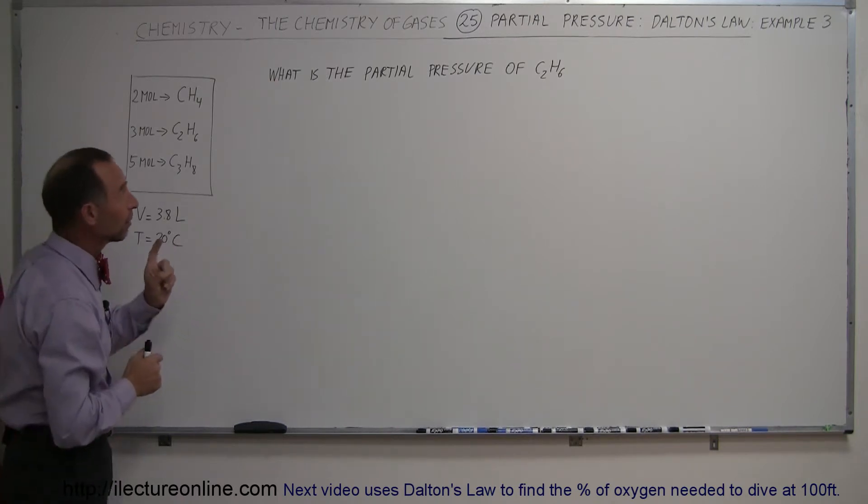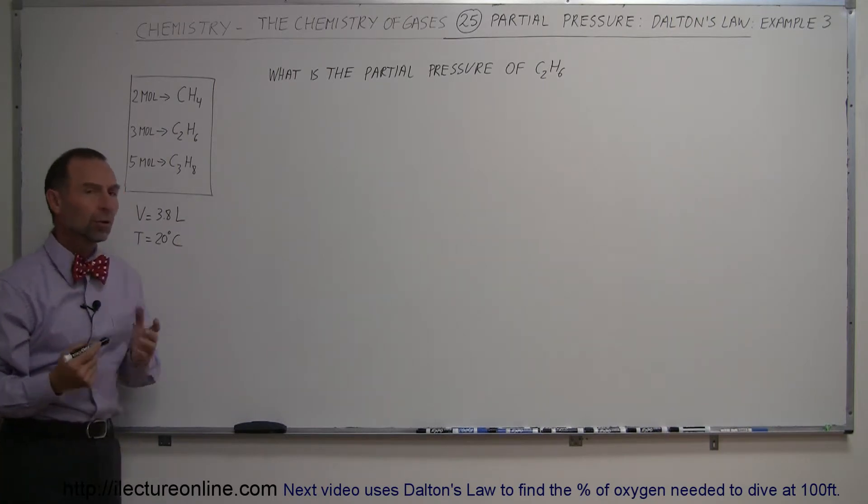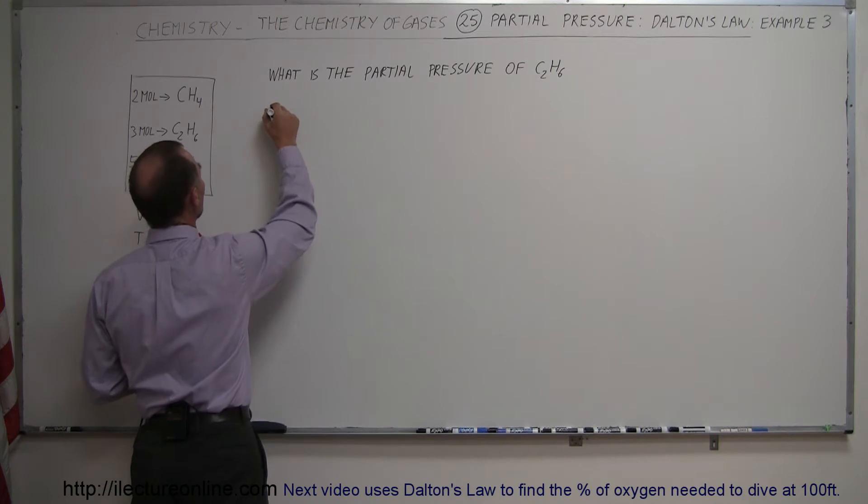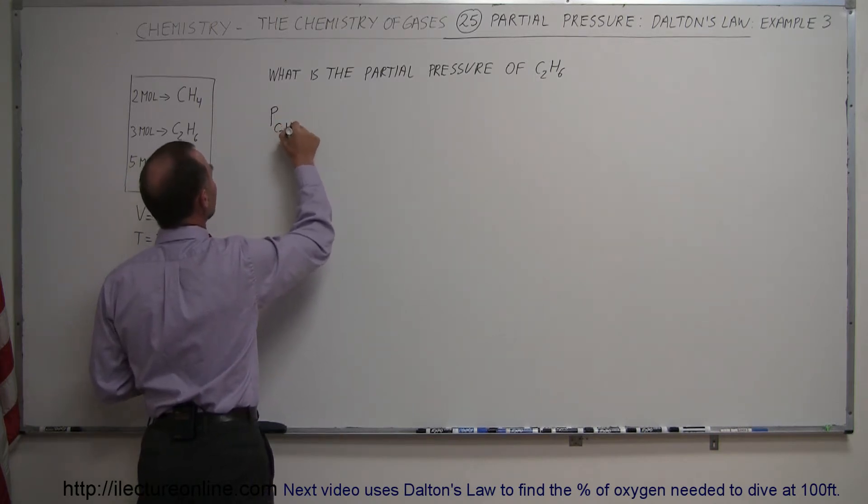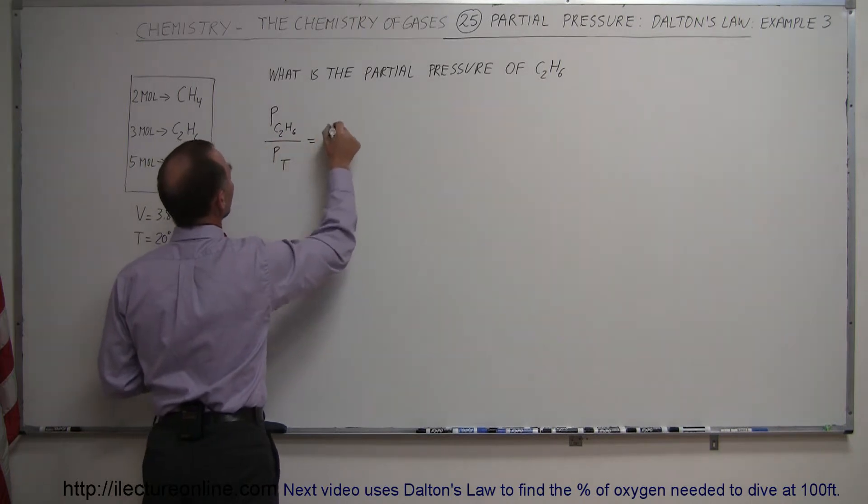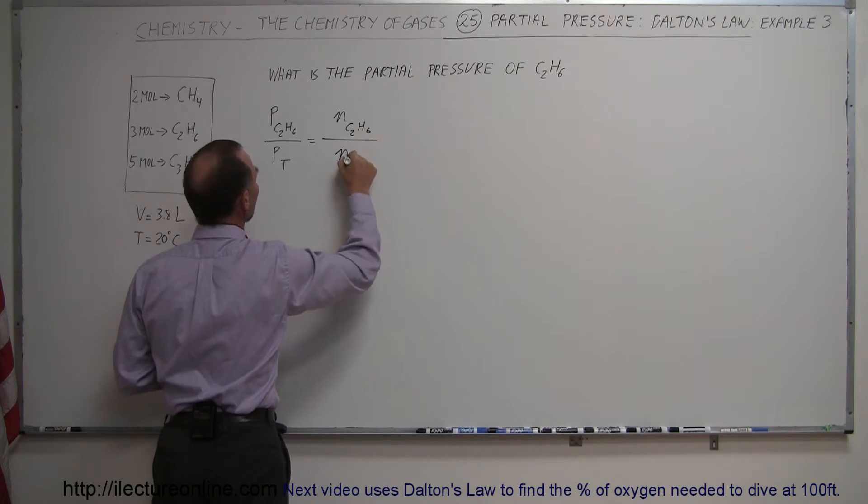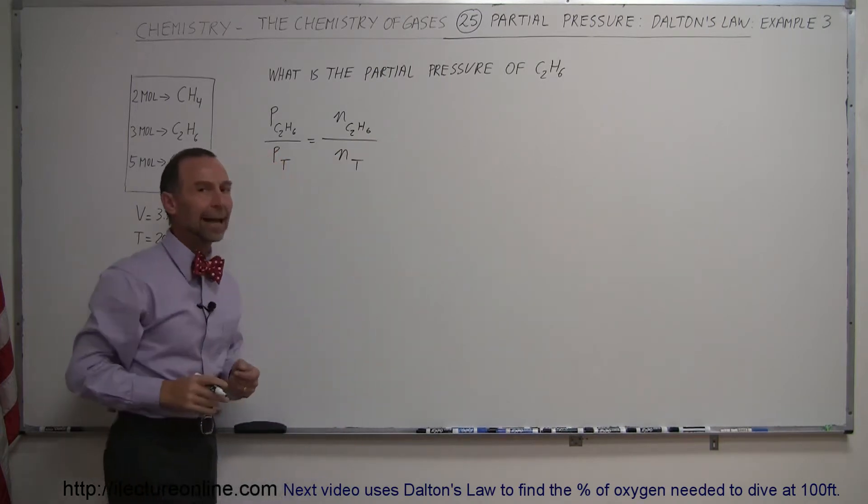So now we're trying to find the partial pressure of ethane. Using Dalton's Law and the equation PV equals nRT, we can say that the ratio of the pressure caused by the ethane divided by the total pressure is equal to the number of moles of ethane divided by the total number of moles in the entire gas mixture.